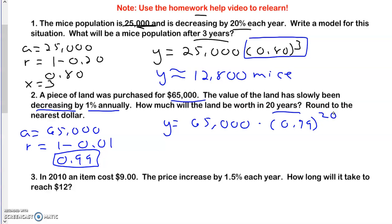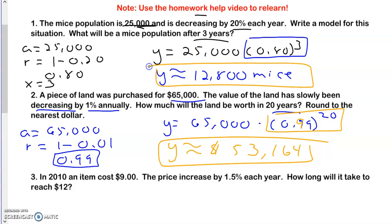Again, I take my calculator and put those numbers in. I'm going to take 0.99 to the power of 20, get that answer, multiply that by 65,000. And I'm going to get approximately this much money. It says to round to the nearest dollar. That's how much my property is worth. I'm sad that it's going down.